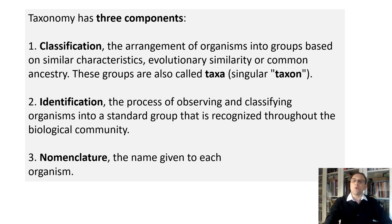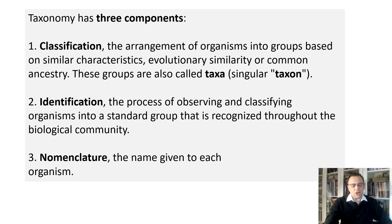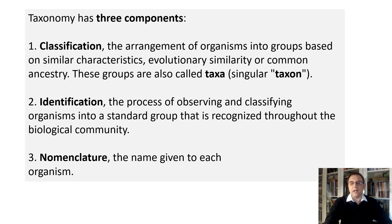Identification is the process of observing and classifying organisms into standard groups recognized throughout the biological community. Nomenclature is the name given to each organism. Every time a new organism is discovered, it has to have its own name, so scientists have to come up with a Latin name for the organism.